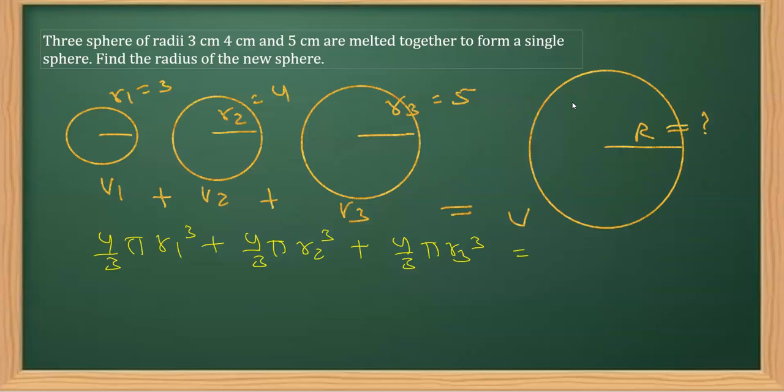So do not place the values at this stage. Instead, you should take 4/3 π as common. So I can write this as r1³ plus r2³ plus r3³ is equal to 4/3 π R³. Now what we can see here, these 4/3 π and 4/3 π get cancelled.